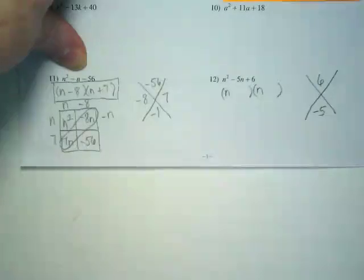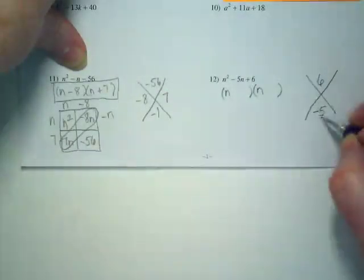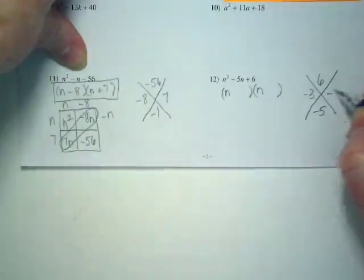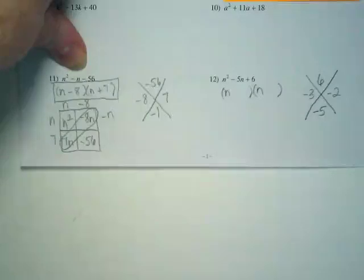What are my two numbers that when I multiply them I get positive 6, and when I add them, I get negative 5? Order doesn't matter. I could have put negative 2, negative 3.